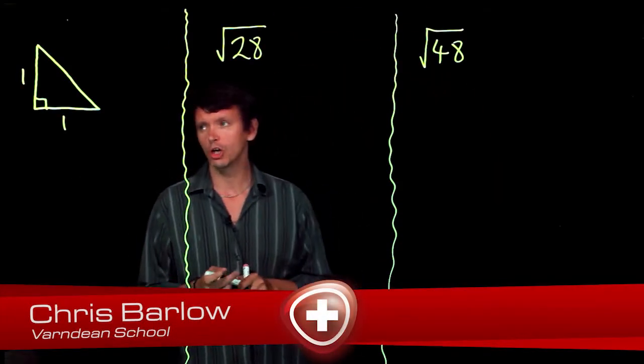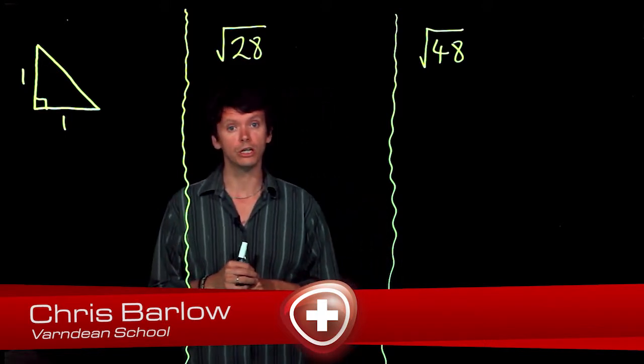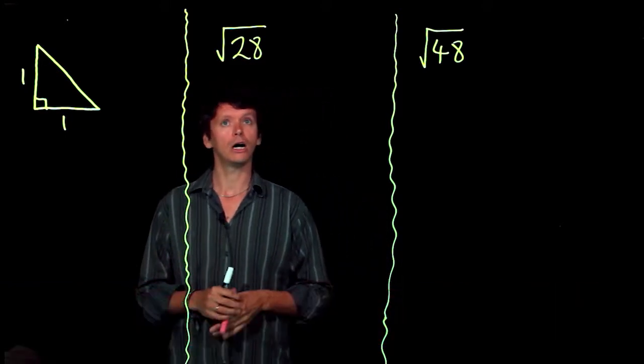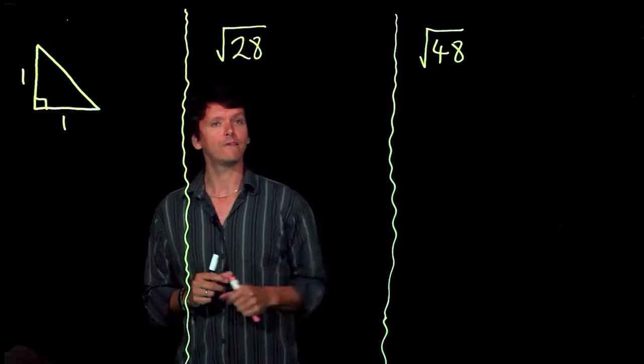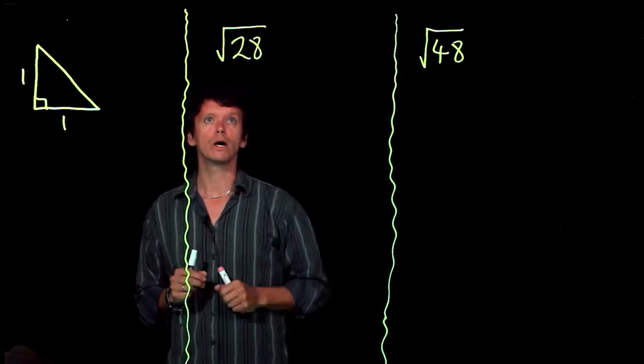Okay, in this video we're going to have a look at something called surds. Surds are numbers like the ones that we have here, which are essentially numbers in square roots.